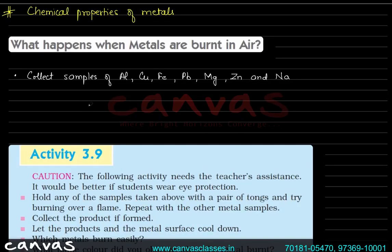Now let us start with the next lecture. In the previous lecture, we saw that metals and non-metals can only be segregated on a physical property basis. Now we will discuss the chemical properties of metals.